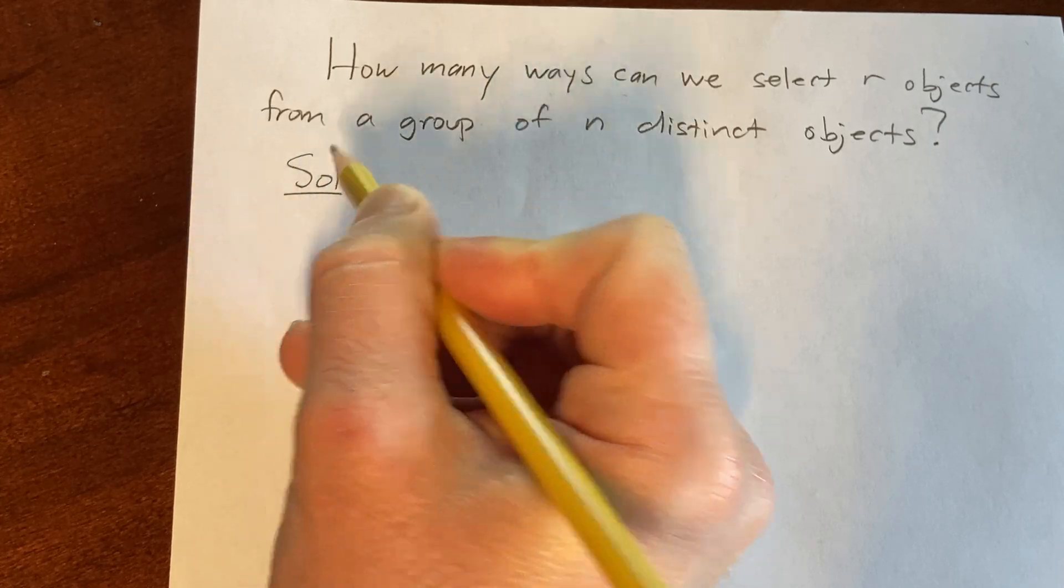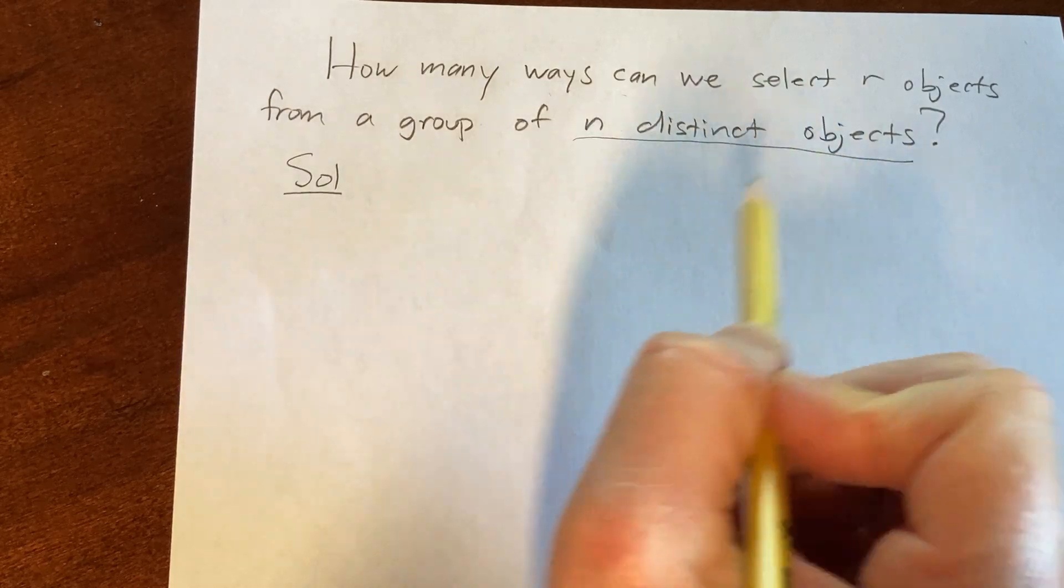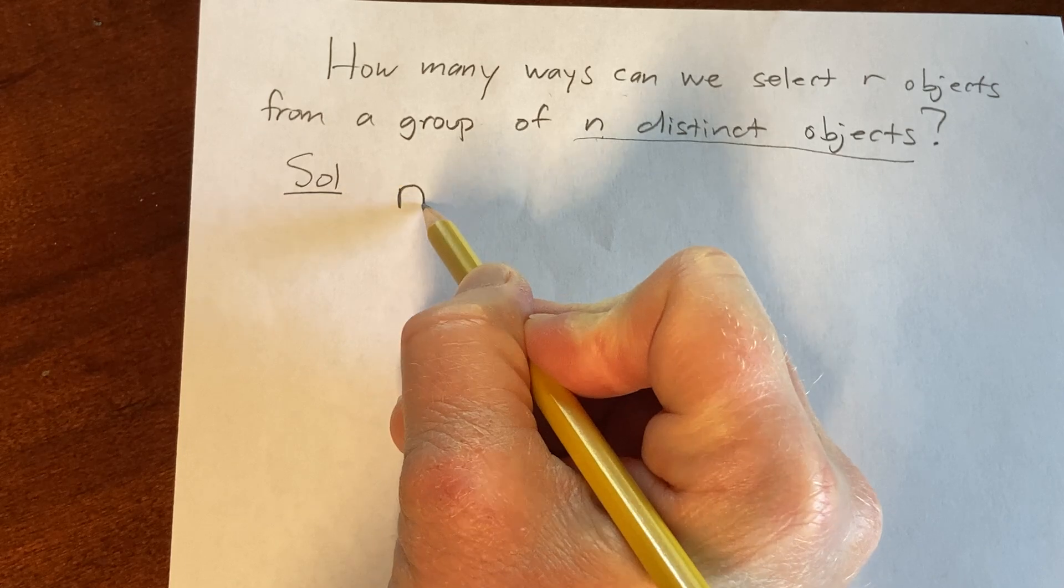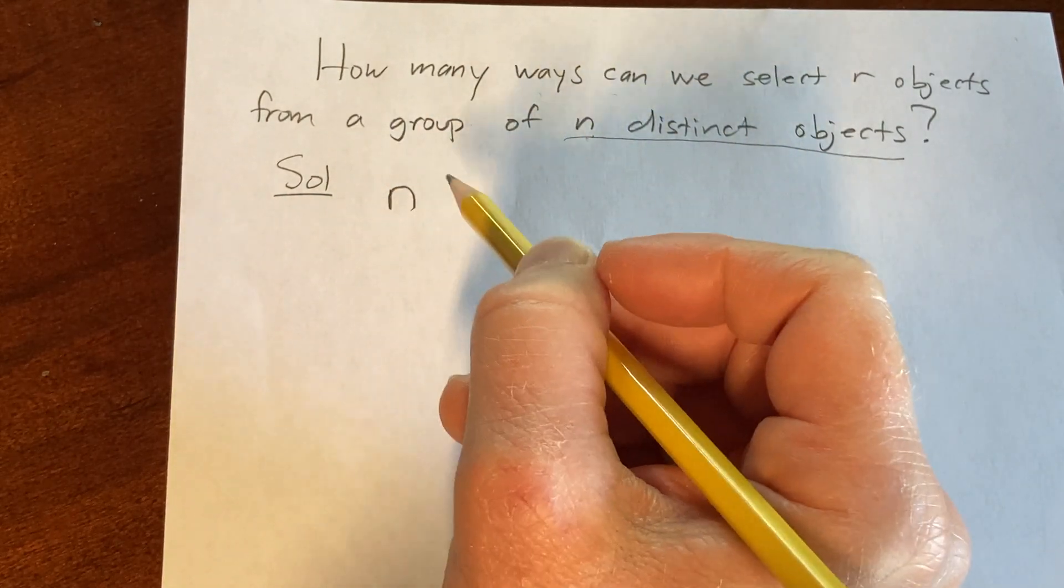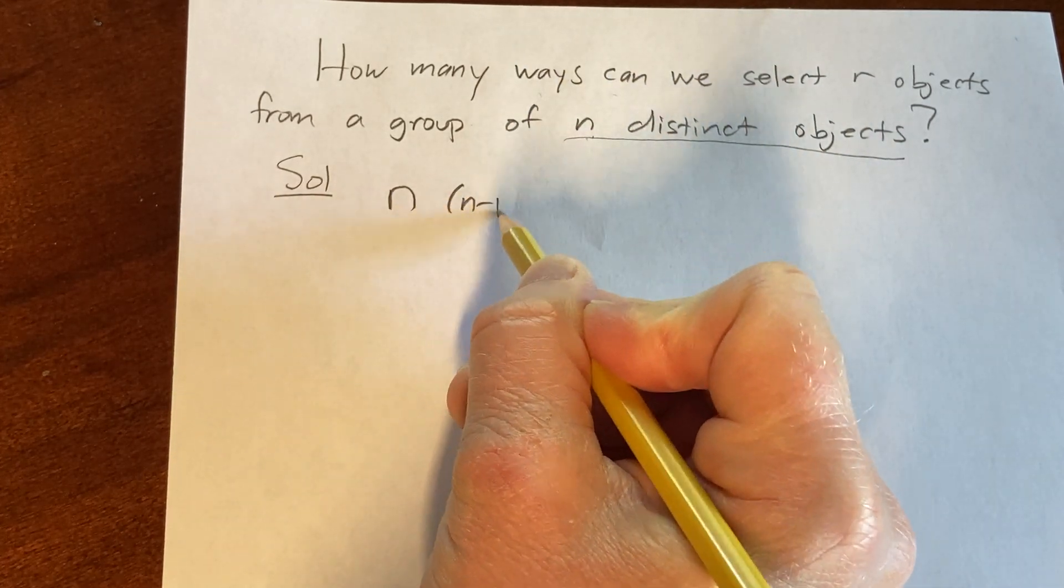Solution. We're trying to pick r objects and we have n objects total. If we have n objects total, there are n ways to pick the first object. We've already taken an object out, so there's n minus 1 objects left. So there's n minus 1 ways to pick that second object.